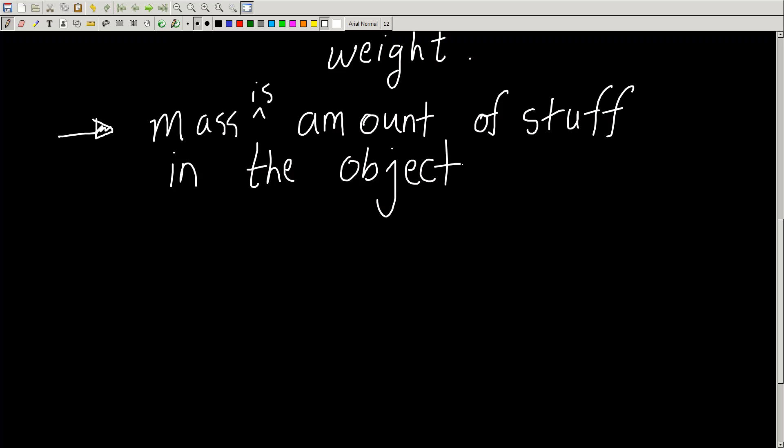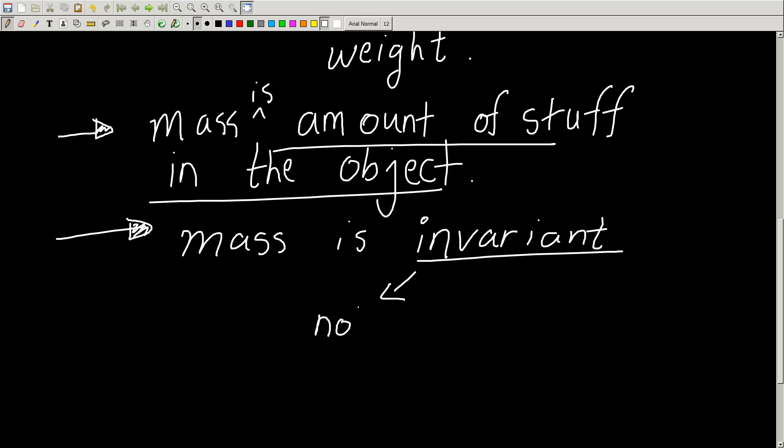So the stuff that makes me who I am, that's what makes up my mass. So if the mass is the amount of stuff in the object, what we can say then is that mass is invariant. What does invariant mean? Well, invariant means not changing.